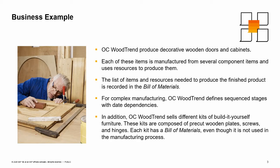In this example, we look at the company OC Woodtrend, which produces custom wooden doors and cabinets. Each of these items is manufactured from several component items and uses resources to produce them. The list of items and resources needed to produce the finished product is recorded in the Bill of Materials.